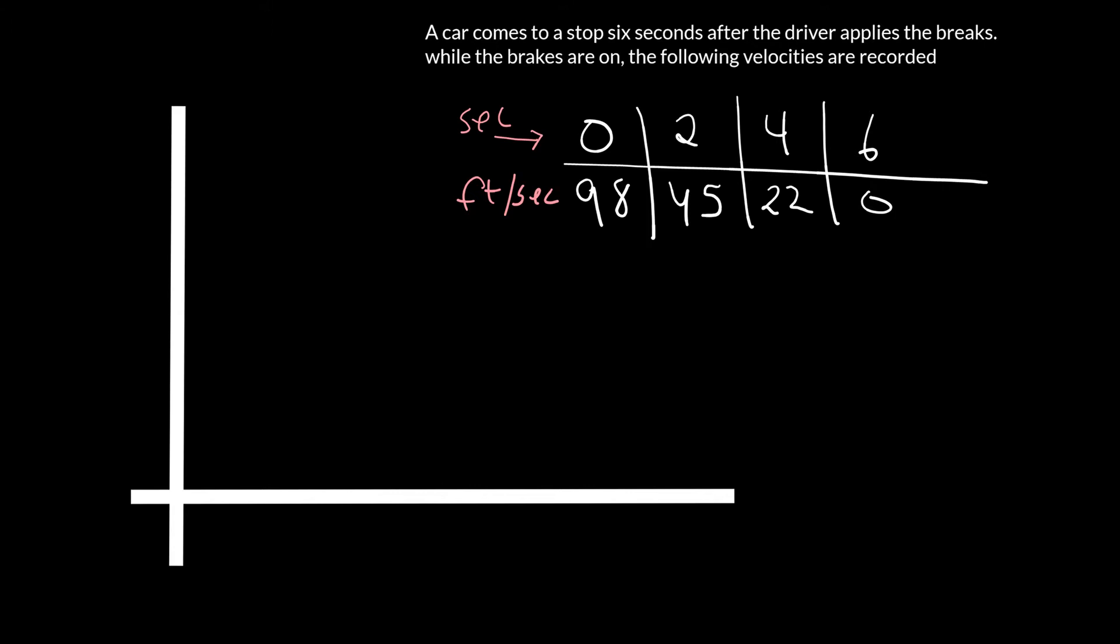And what we want to do is we want to give a lower and an upper estimate. So you could simply pick values on the left of the table, meaning something like those, and then pick values on the right and multiply them by two, since the distance between each second is two seconds.